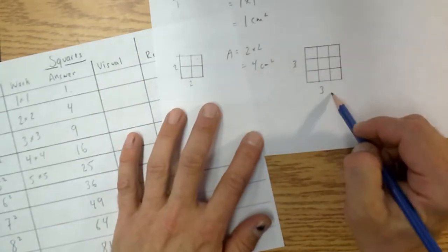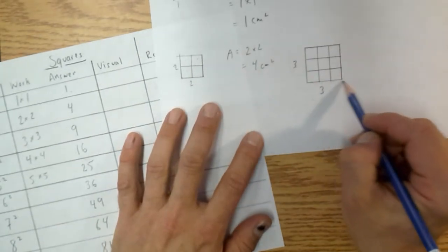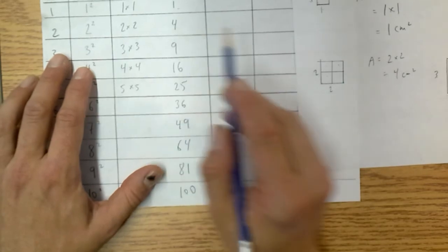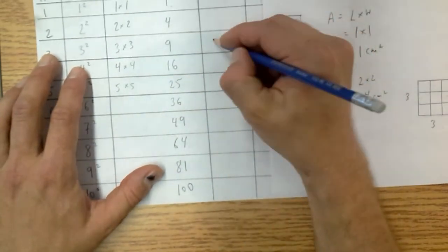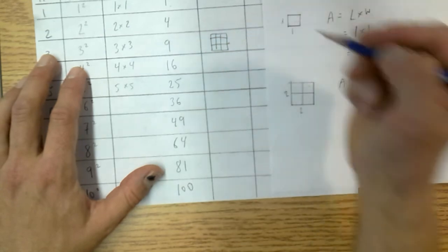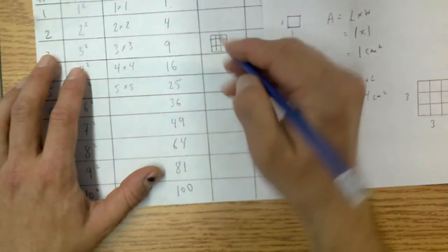So any square with side length 3 will give us 1, 2, 3, 4, 5, 6, 7, 8, 9 squares. And that's the visual there. So that's how you can tell in a 3 by 3. If we were to just draw it like this, it would be like this. There's a 3 by 3 and that's the 9.